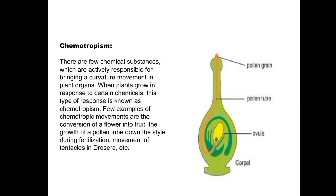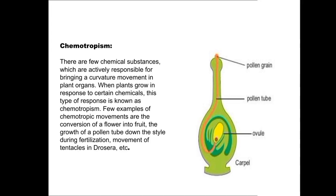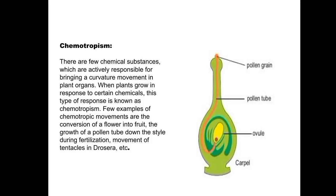Chemotropism is when curvature takes place in response to a chemical stimulus. The growth of the pollen tube through the stigma and style towards the embryo sac, and the growth of fungal hyphae towards sugar and peptones, are examples of chemotropism. It is the movement of the plant towards a chemical stimulus — for example, during fertilization the stigma produces a chemical in response to which pollen tubes grow towards the ovule.